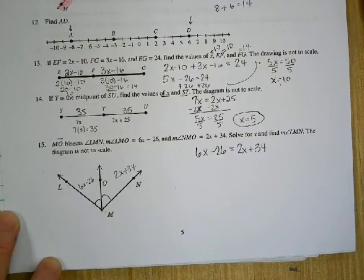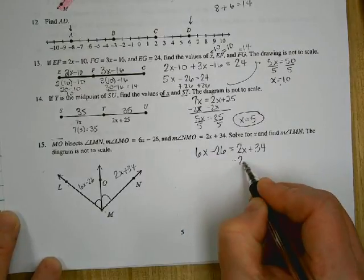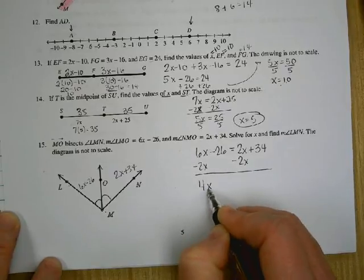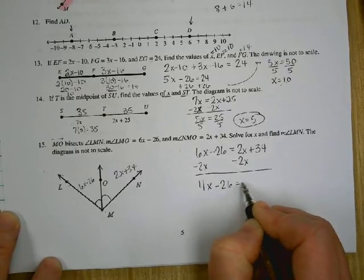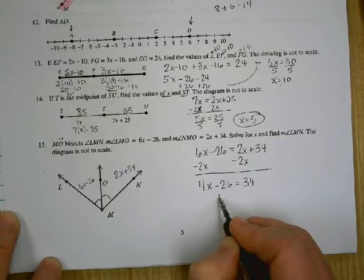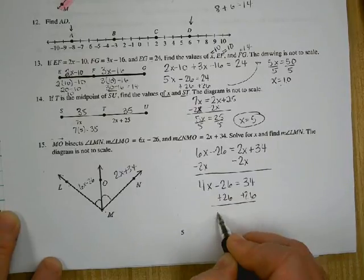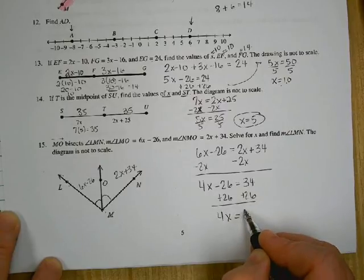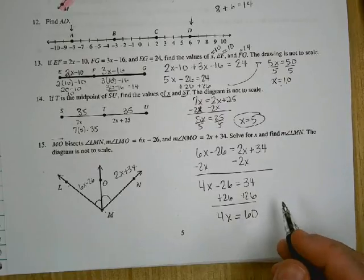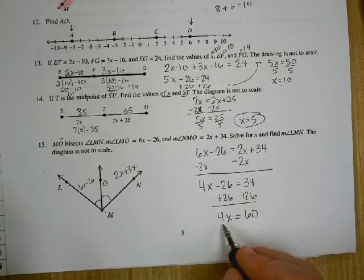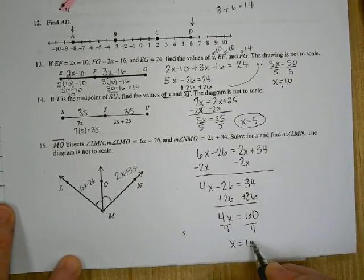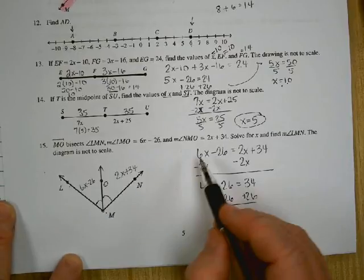And what do we do to solve? Subtract 2x from each side. 4x minus 26 equals 34. So 4x is equal to 60. Divide by 4. x is 15.